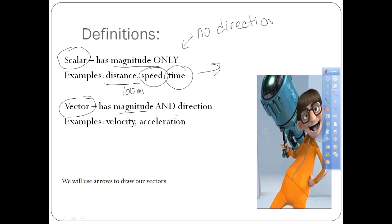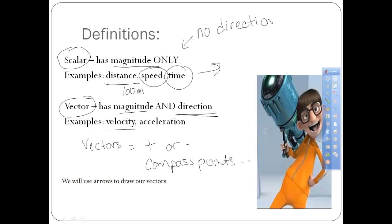Vectors have magnitude and direction. They have a number and they specify a positive or negative direction, or the problem will say something like it's going towards the coast, to the east, to the north — however you want to describe it. Some ways you can show direction with vectors: you can say something is positive or negative, you can specify a compass point or cardinal direction — north, south, east, and west — or you can do angles. We're going to do primarily angles in this class because it's very descriptive as to where the object is going to end up.